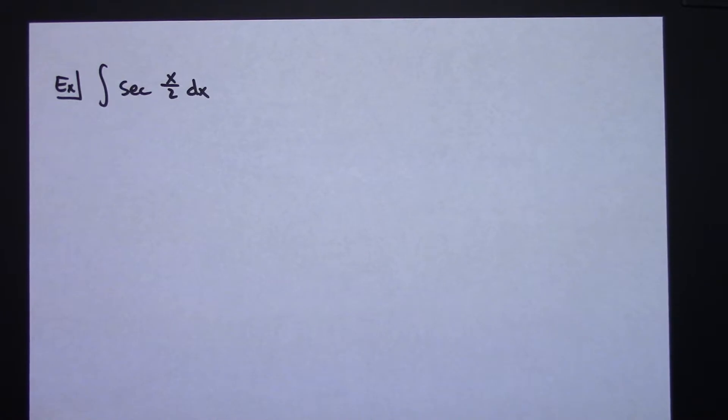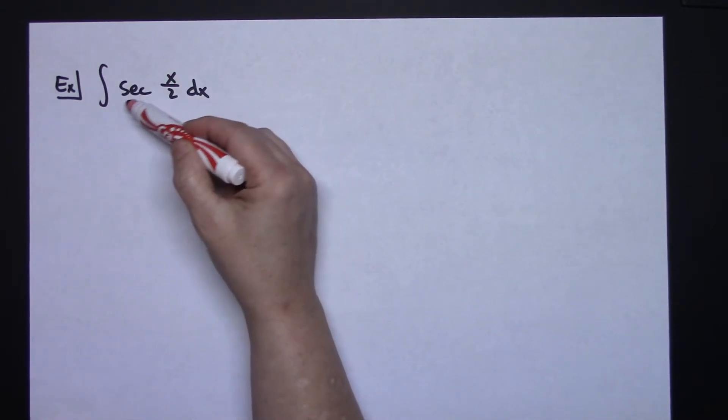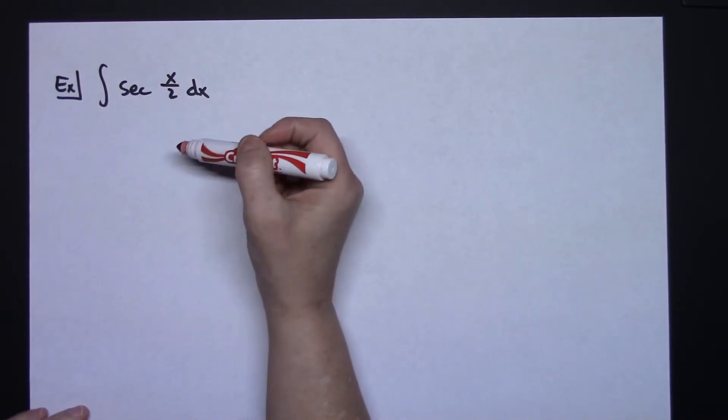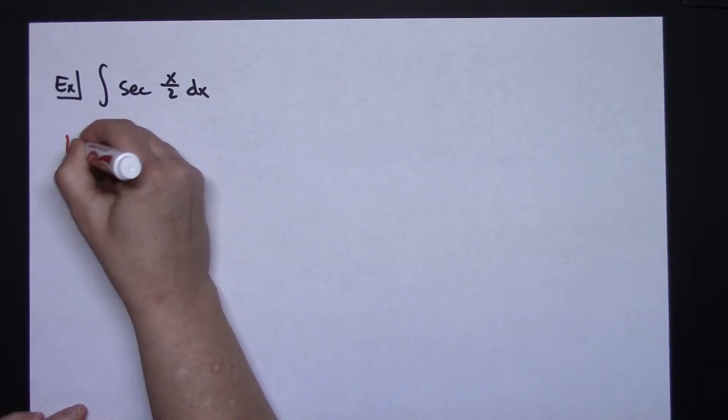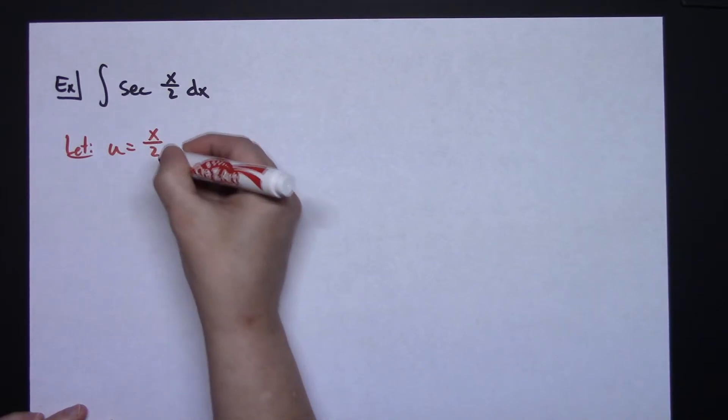I'm going to again look at this and see an inside function right there. Outside function is secant, inside function is x over 2. So I'm going to let my u be that inside function, x over 2.